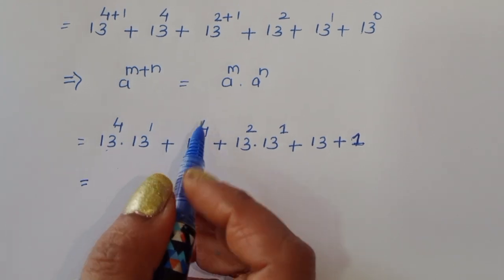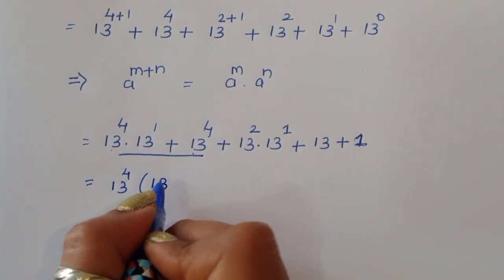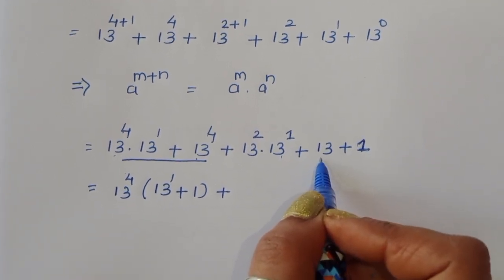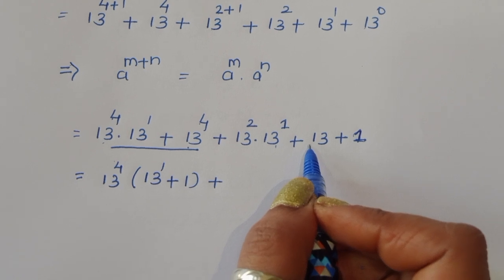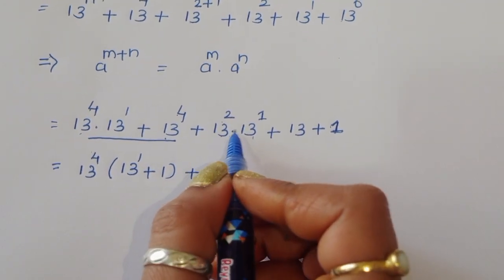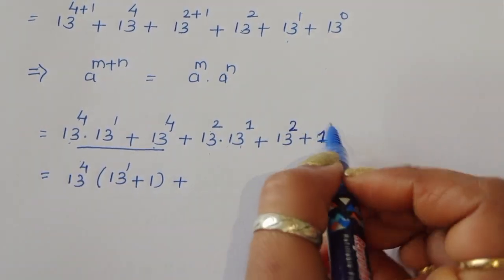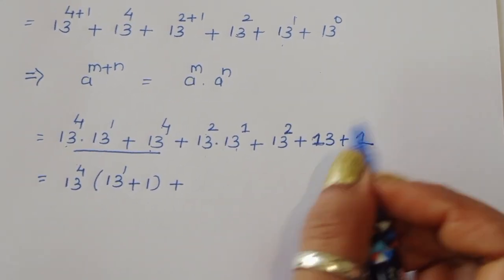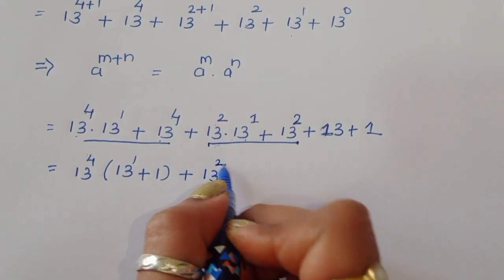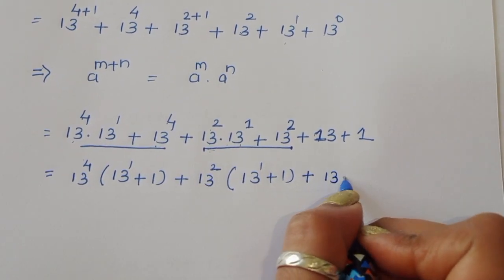Now we can see 13 power 4 appears twice, so we take 13 power 4 as common. The remaining left side becomes 13 power 1 plus 1. Then we also have 13 power 2, 13 power 1, and 13 — we can take 13 as common here. When taking 13 as common we get 13 power 2. So we have 13 power 2 times 13 power 1 plus 13 power 2, plus 13 power 1 that is 13, plus 13 power 0 that is 1.